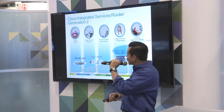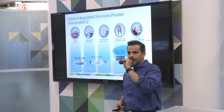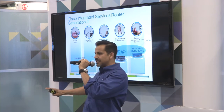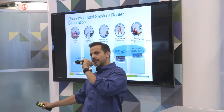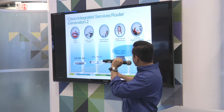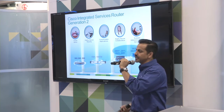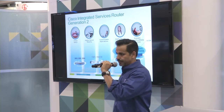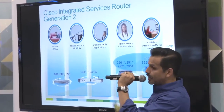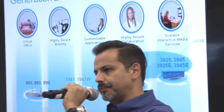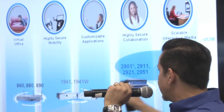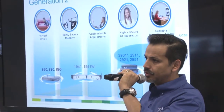This is the portfolio of our ISR G2s. We start with our 800 series for that remote office or single home user, then the 1900s. Starting at the 2900s is where we offer the Cisco UCS E-Series servers, beginning at the 2911. The 2901 has an asterisk because there's no SM slot to insert an E-Series. But from the 2911 onwards, we support the UCS E-Series server.